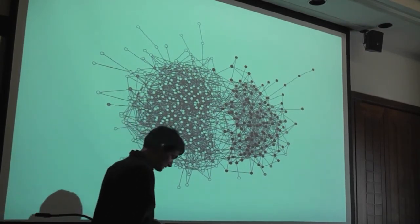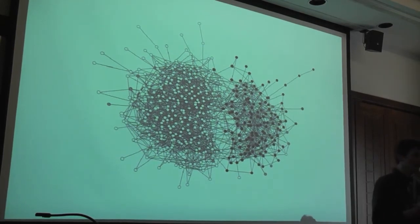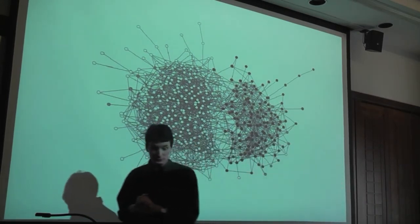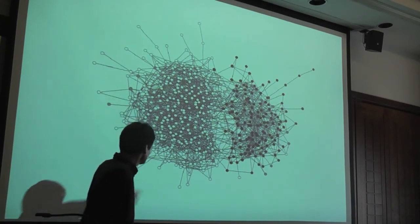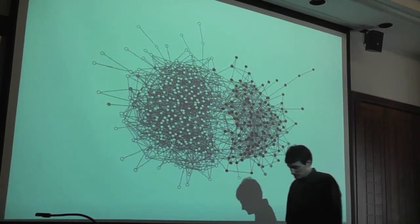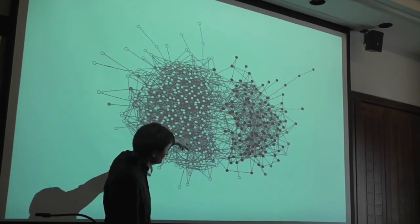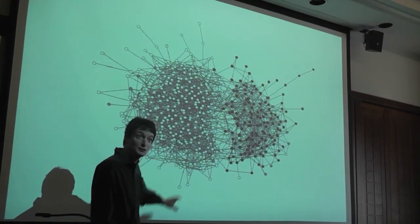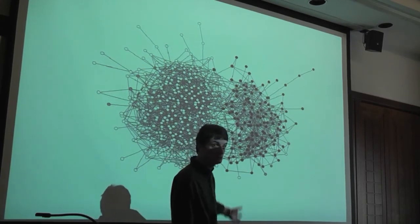Here is an example from a friendship network — another one from the school friendship study. In this particular school you can see two big communities. It turns out to be an interesting case that Jim Moody himself has done quite a lot of work on: the black nodes in this network are the black kids in the school, showing the communities split along racial lines. This is something sociologists have studied for many years, and this network provides an interesting visual depiction of it.